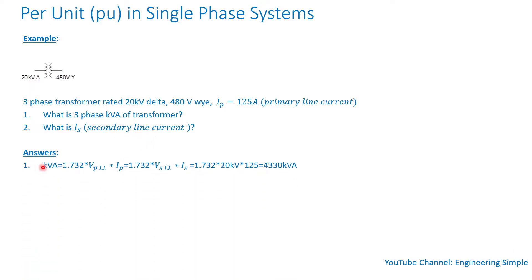The three-phase kVA equals √3 times the line-to-line voltage times the line current of the primary, which also equals √3 times the secondary line-to-line voltage times the secondary line current — because power in equals power out.